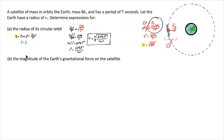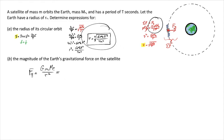From here, things get easier. We've been asked for the magnitude of Earth's gravitational force on the satellite, which we've already mentioned: FG equals GmmE over r squared. The only issue was that r was not a given variable, but now it is because we found it in part a. We can leave it in terms of r from part a, or substitute in. I'll make the substitution: GmmE divided by r squared.